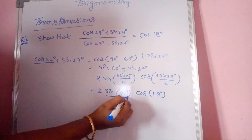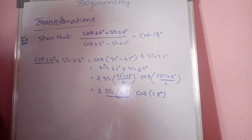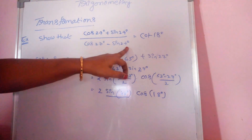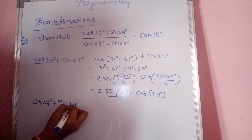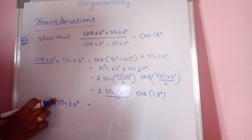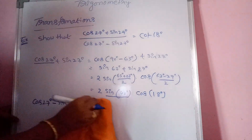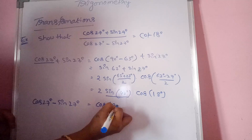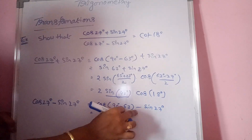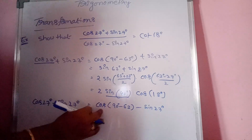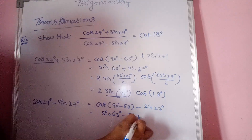Similarly, for the denominator, cos 27° minus sin 27°: using the allied angle, cos 90° minus 63° becomes sin 63°, so cos 27° minus sin 27° equals sin 63° minus sin 27°. This is the sin C minus sin D form.